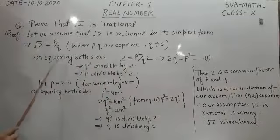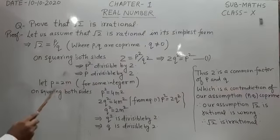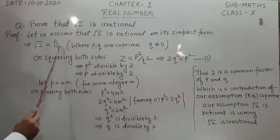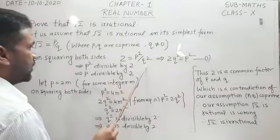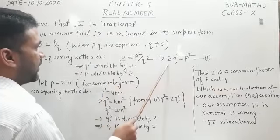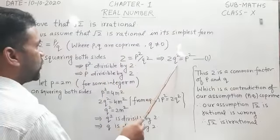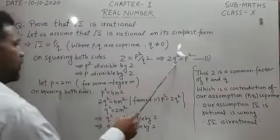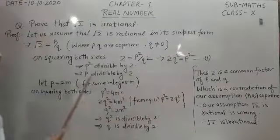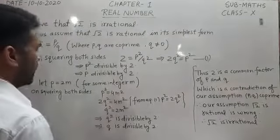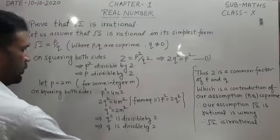On squaring both sides of this we get 2 is equal to p square upon q square. This q comes to the left hand side and becomes 2q square is equal to p square. From this we can say p square is divisible by 2.